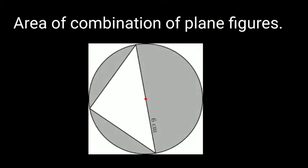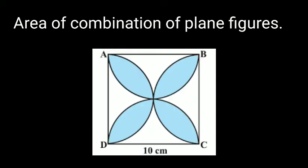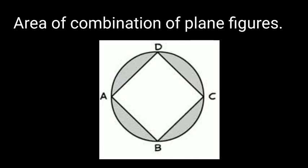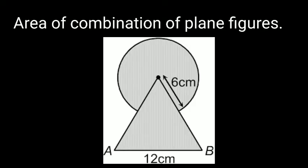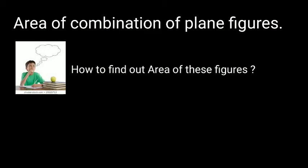Today's topic is the combination of plane figures. In this topic we will find out the area of figures which are made by two or more plane figures — like a semicircle and circle, or a quadrant and semicircle. The first step is to decide which figures make up the given combined figure.